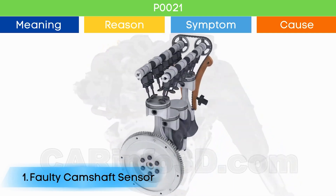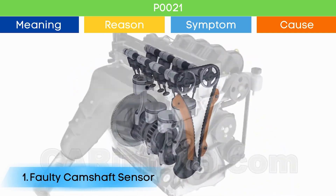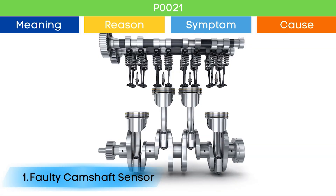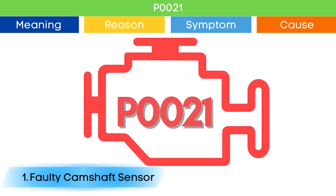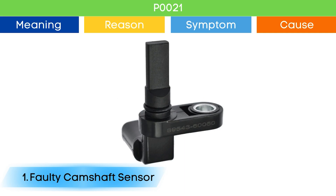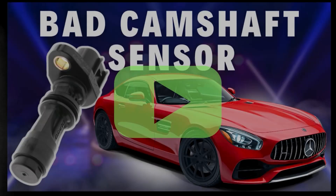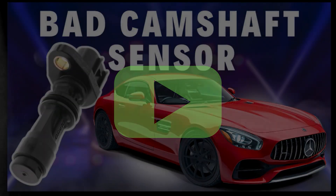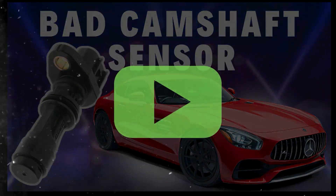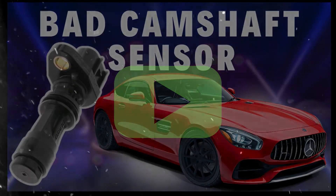Cause number one: bad camshaft position sensor. Due to a malfunction of the camshaft position sensor, the ECU may detect an engine timing error, which may trigger P0021 and other OBD-II codes related to camshaft position sensors, along with symptoms of a bad camshaft position sensor. Check our detailed video to learn more — link in the corner.